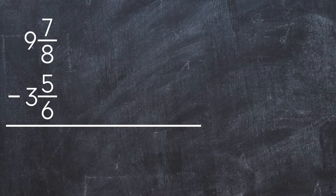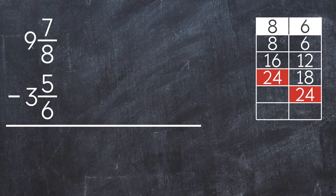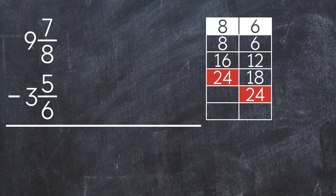As you can see, we have unlike denominators, so we need to find a common denominator to subtract. To find the common denominator, we need to find the least common multiple between 6 and 8. So the common denominator is 24.